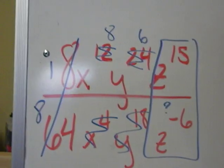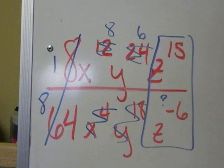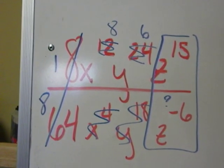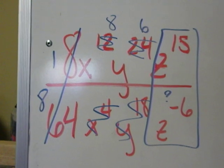8 over 64, they both divide by 8, so that reduces to the fraction 1 over 8. 12 minus 4 is 8, and because it's positive, the x's remain in the numerator.